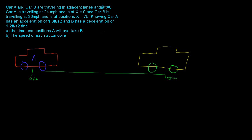This is a problem that involves motions of several particles. Car A and car B are traveling in adjacent lanes. At time equal to zero, car A is traveling at 24 miles per hour and is at position x equals zero. Car B is traveling at 36 miles per hour and is at position x equals 75. Car A has an acceleration of 1.8 feet per second squared, and B has a deceleration of 1.2 feet per second squared. Find the time and positions that A will overtake B, and the speed each automobile is traveling.